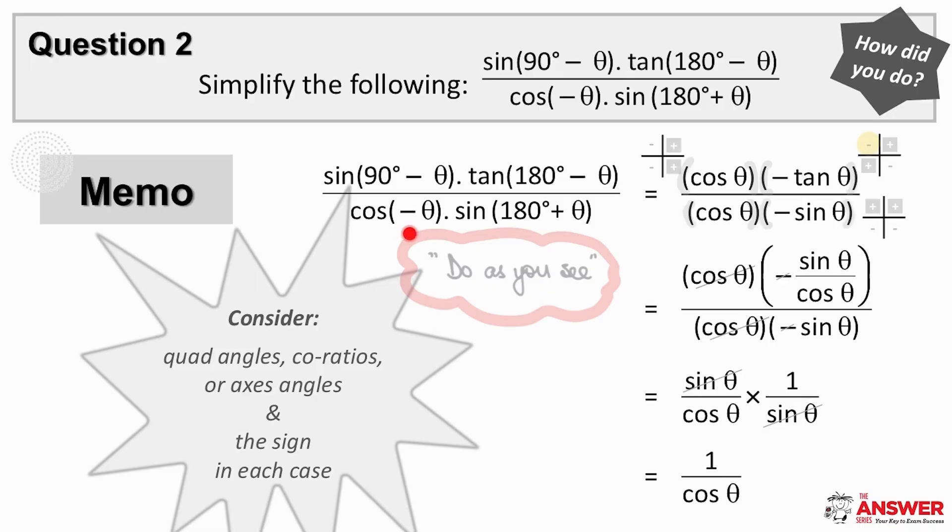In the denominator, cos of negative theta reduces to cos of theta and sin of 180 plus theta reduces to negative sin theta, both of these using quad angles.